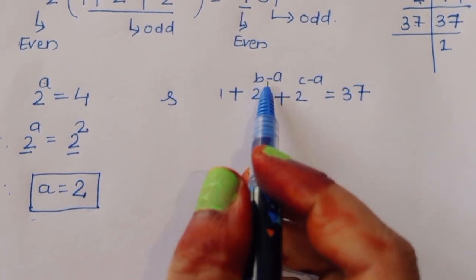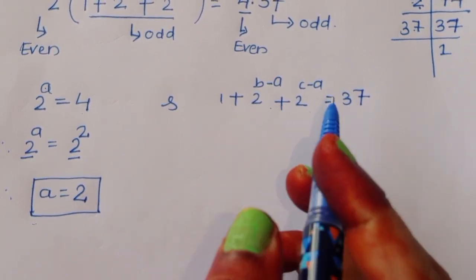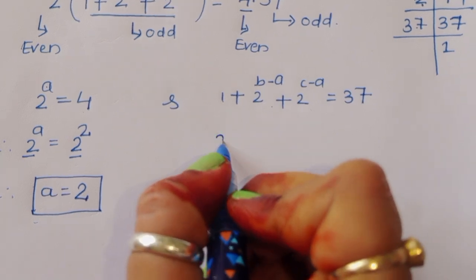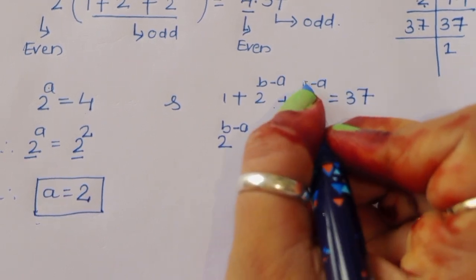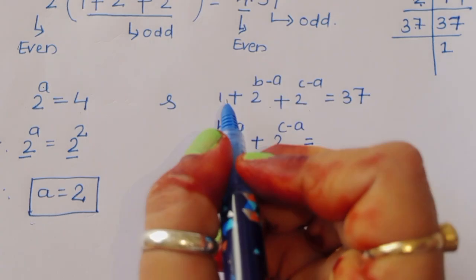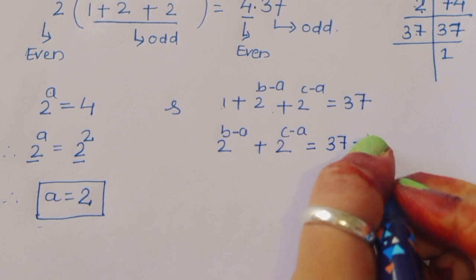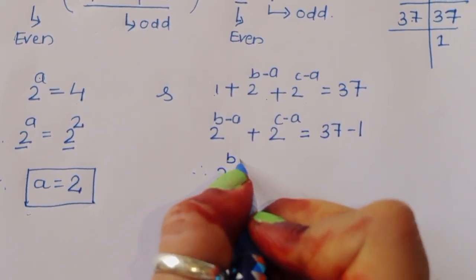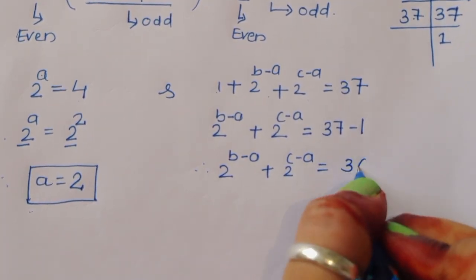The second term gives us: 1 plus 2 power b minus a plus 2 power c minus a equals 37. Subtracting 1 from both sides, therefore 2 power b minus a plus 2 power c minus a equals 36. We note a = 2 as equation number 1.